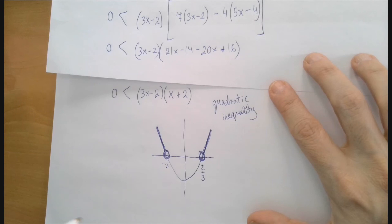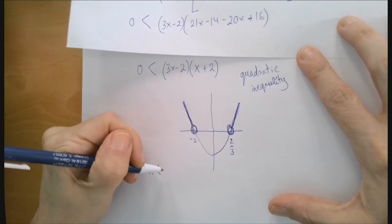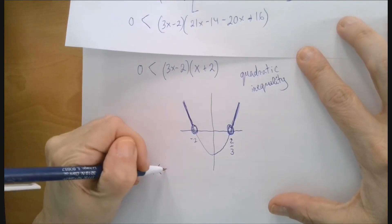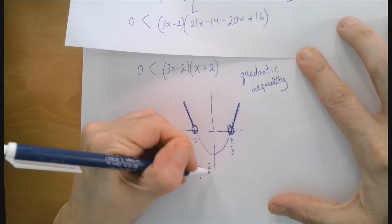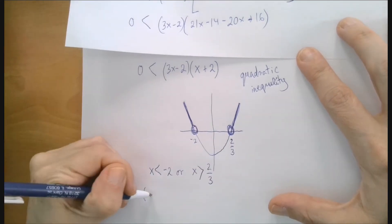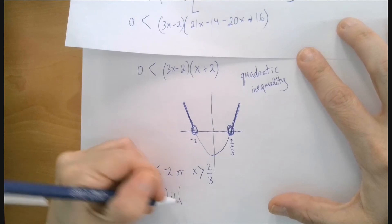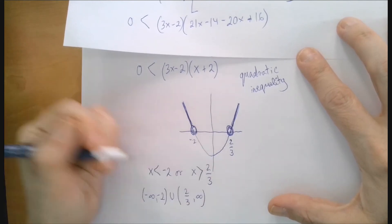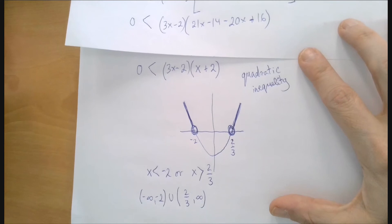Now that we've visually found that part of the parabola, we just have to figure out what x values generate those two parts of the parabola. Well, it's either less than negative 2 or greater than 2 thirds, or in interval notation, negative infinity to negative 2, union 2 thirds to infinity.